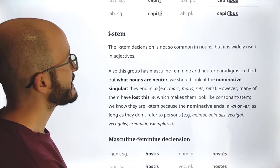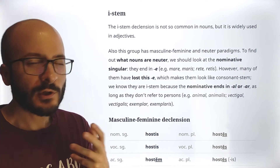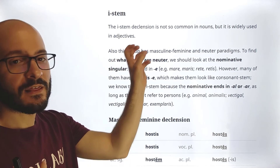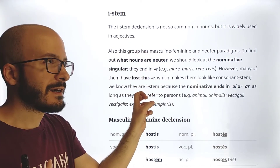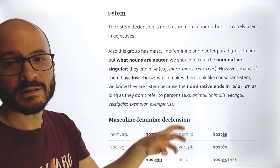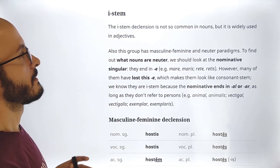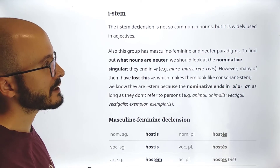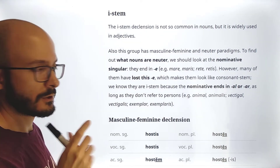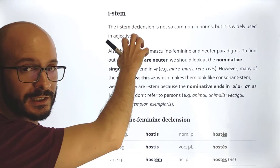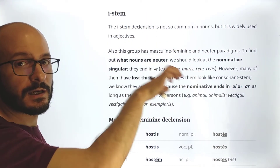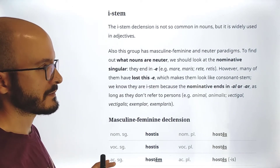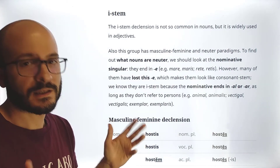Now let's go with the e-stem. You don't have to worry too much because there are some differences between the consonant stem and the e-stem, but about 80% is the same. The e-stem declension is not so common in nouns, but it is widely used in adjectives. So we are going to be using it mostly in the next class with adjectives. This group also has masculine, feminine, and neuter paradigms — paradigm meaning essentially a table.